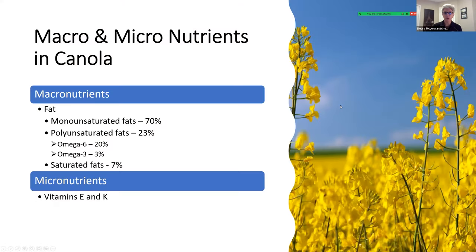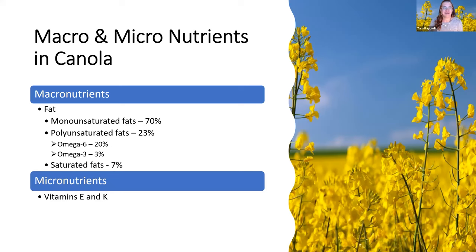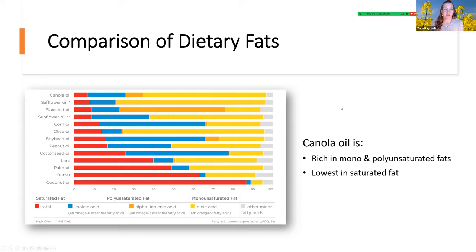Regarding canola and its macro and micronutrients, canola oil's macronutrients are largely fats. Canola oil contains about 70% monounsaturated fats and 23% polyunsaturated fats. Unsaturated fats are considered better fats for a heart-healthy diet. Polyunsaturated fats also contain omega-6 and omega-3 fatty acids, and canola oil contains 7% saturated fats. In terms of micronutrients, canola oil also contains vitamins E and K.